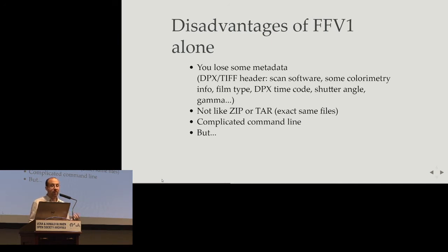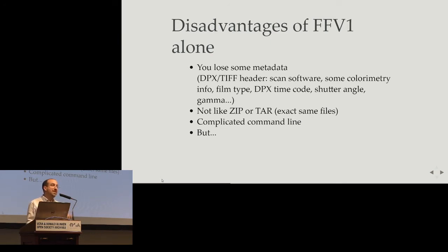It is not exactly the same as a zip or tar, because when you revert to DPX, for example, you have DPX or TIFF but not exactly in the same flavor — little-endian, big-endian and so on. Sometimes we want to be able to retrieve exactly the DPX and TIFF as they were before compression. There are also some difficulties in understanding the FFmpeg command line for compressing DPX, so we want to help with that.